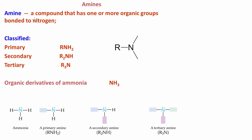So what is an amine? It is a compound that has one or more organic groups bonded to nitrogen. So here we have a nitrogen and this one shows one organic group. These other two bonds could be two hydrogens, one hydrogen and another organic group, or two organic groups.